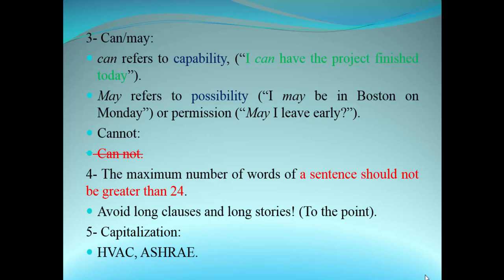Also, for capitalization: if you write an acronym such as HVAC (Heating, Ventilation, and Air Conditioning) or ASHRAE, the American Society, or ASTM — these things that engineers use — you have to write them as they are. If you use a software name or a trademark, you have to write it exactly as it is.